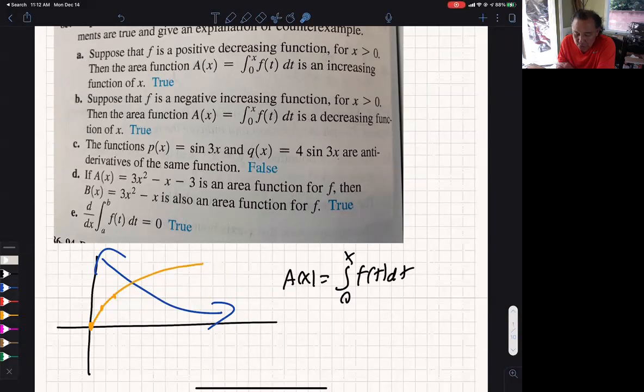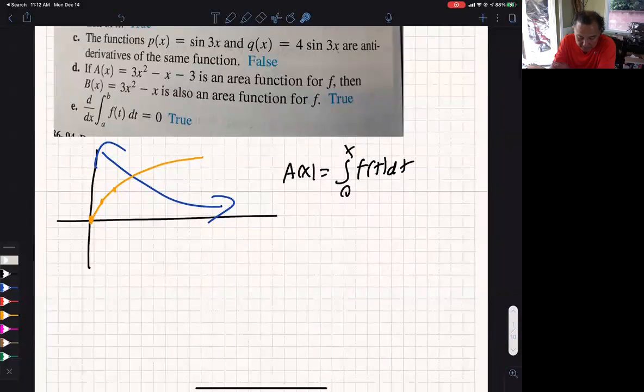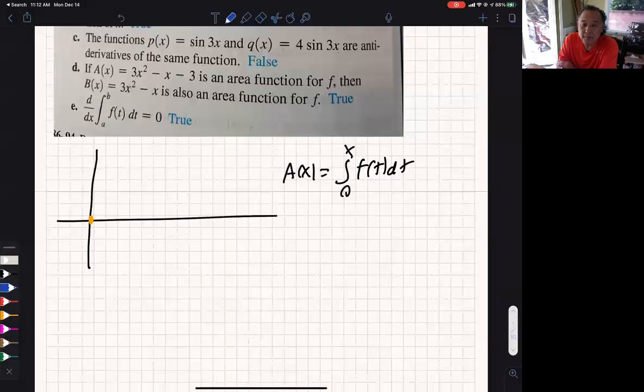Part B, you have a negative increasing function. So let me erase these for part B. Now your function is negative, but increasing. So let me do this. That's negative and increasing.